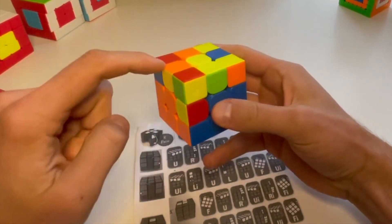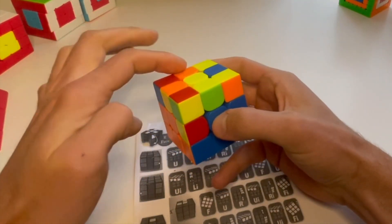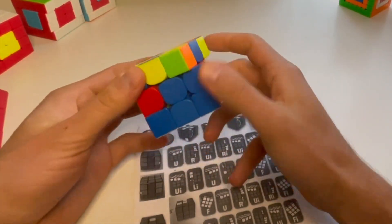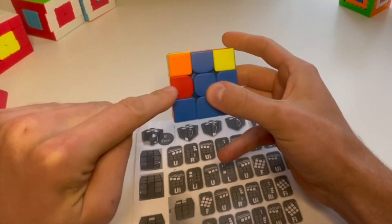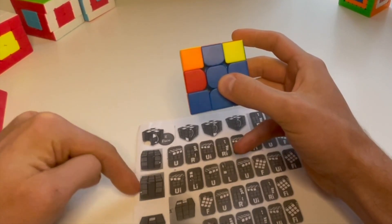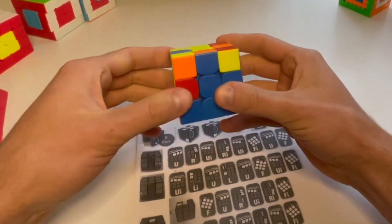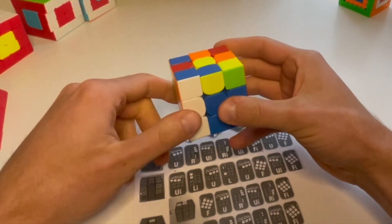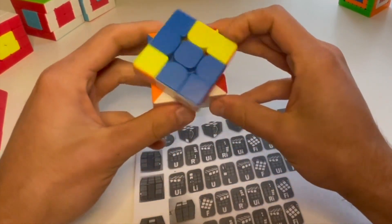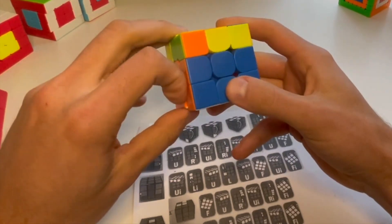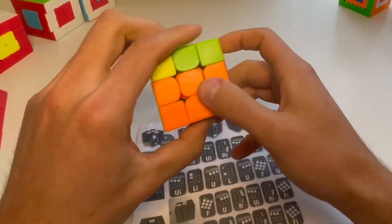So now that piece is over here. Let's go ahead and match it up to our blue and orange. We want it to go there. Now we're again going to use this algorithm: up inverted, left inverted, up, left, up, front, up inverted, front inverted. And that will get me my second layer.